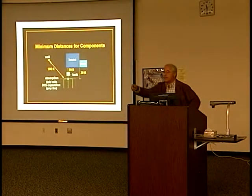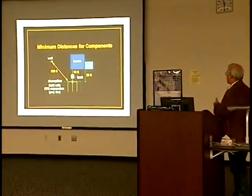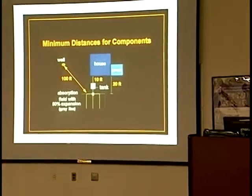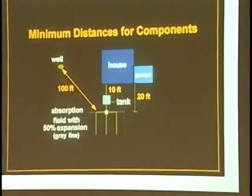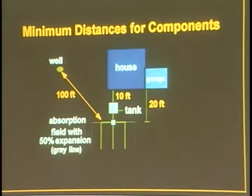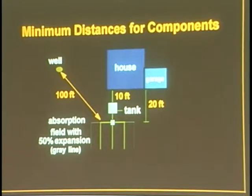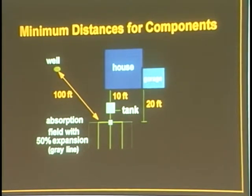Other requirements in Appendix 75A include your lateral dimensions. You've got to be so many feet away from the house — 10 feet from the tank, 20 feet from the leach field, 10 feet to a property line, and 100 feet from a body of water. Your leach system is supposed to be 100 feet from a body of water, 100 feet from a well water supply — not only your well, but 100 feet away from your neighbor's well to prevent your system from contaminating it.